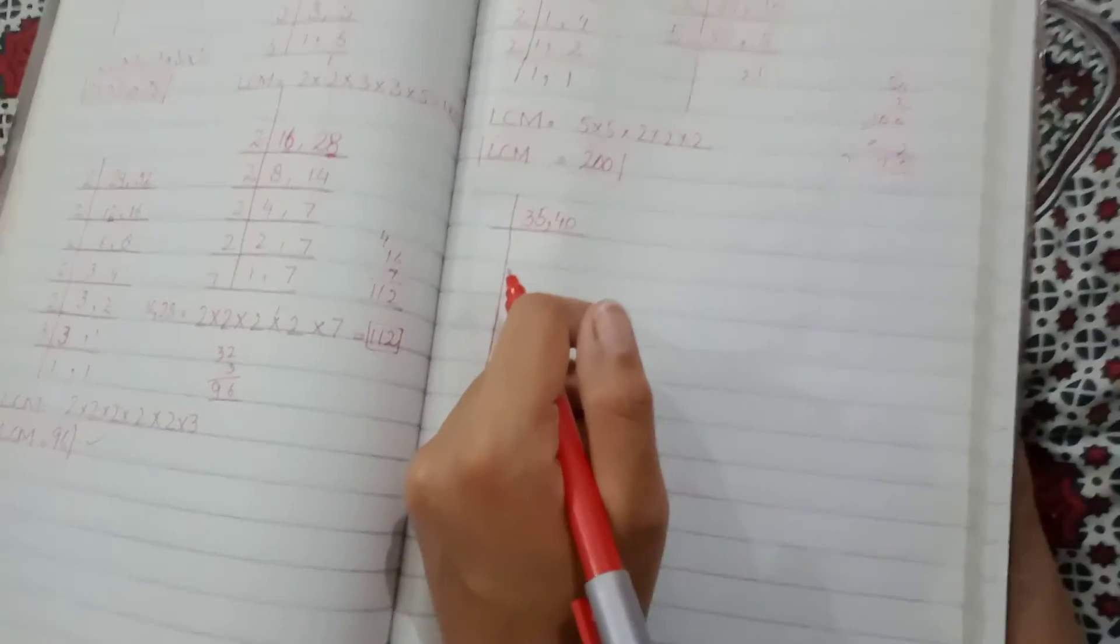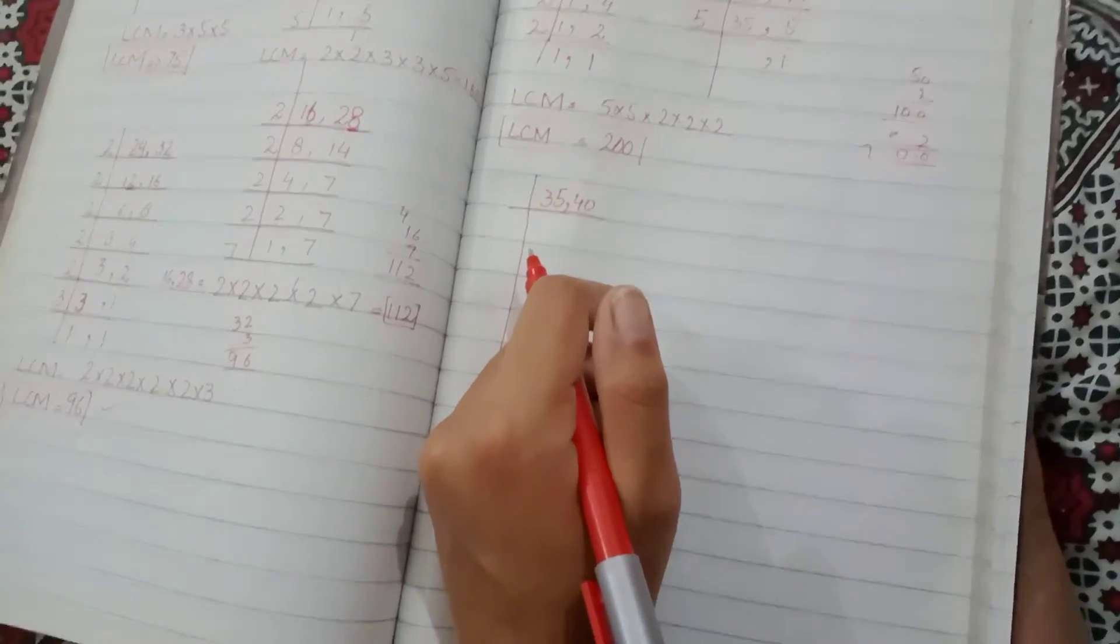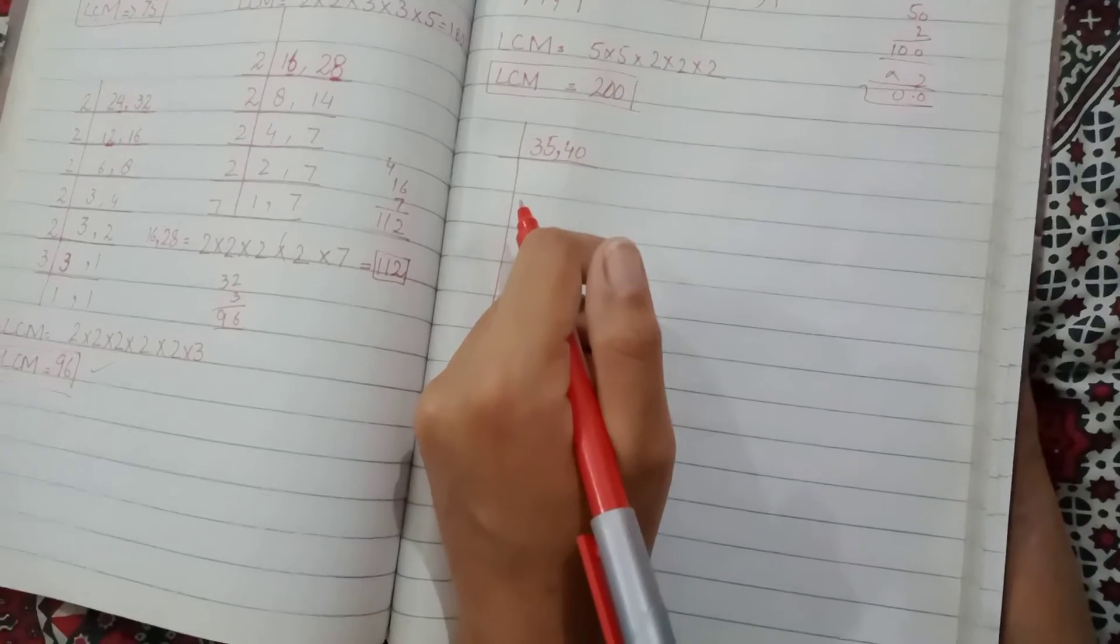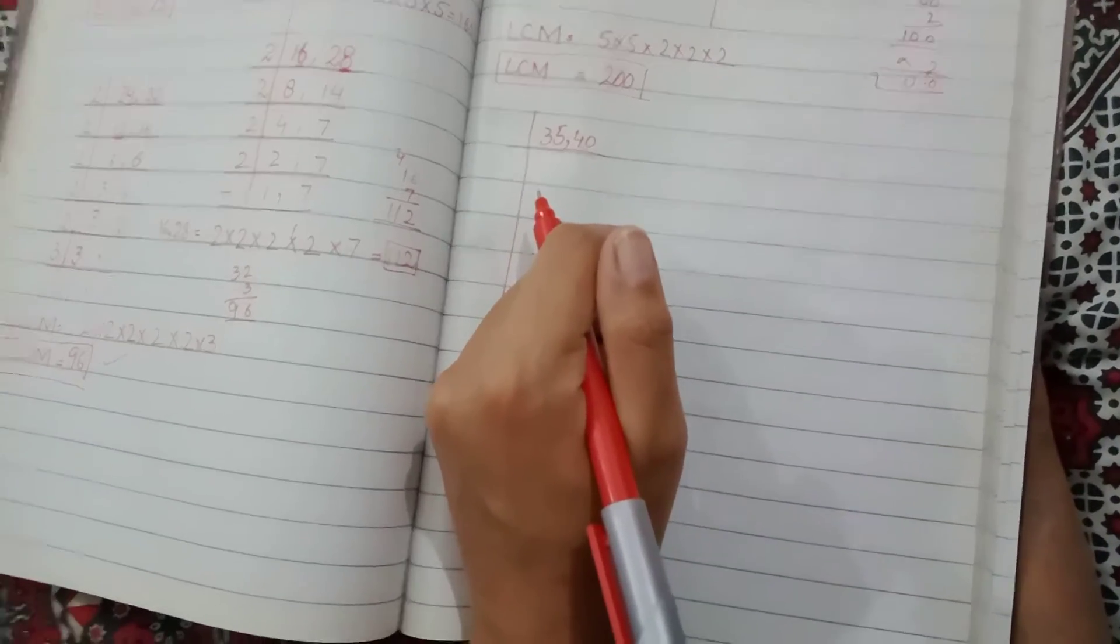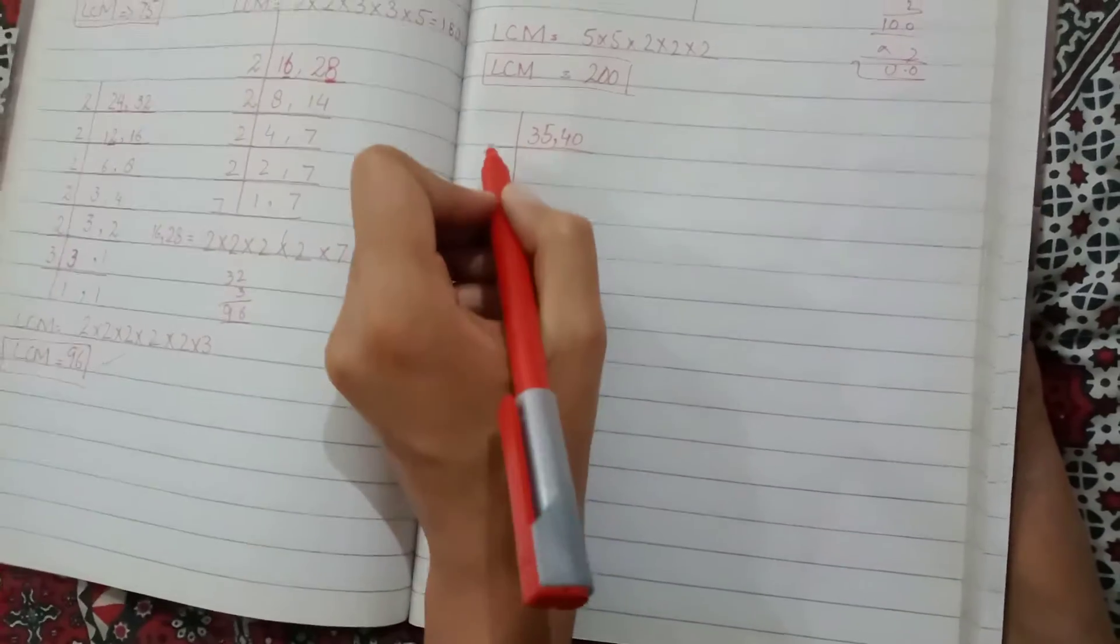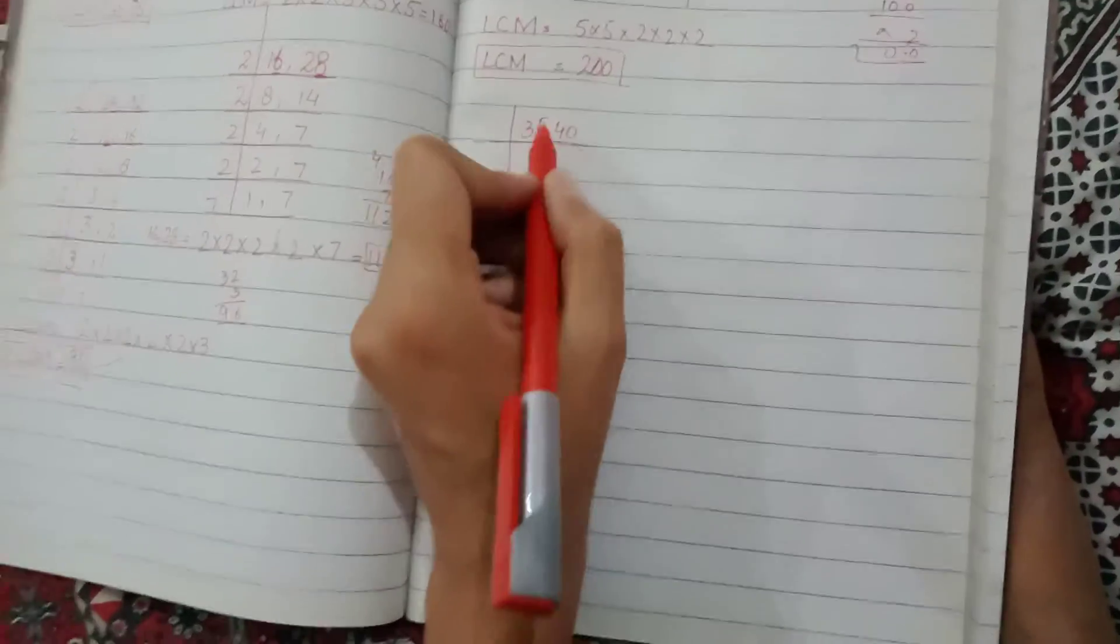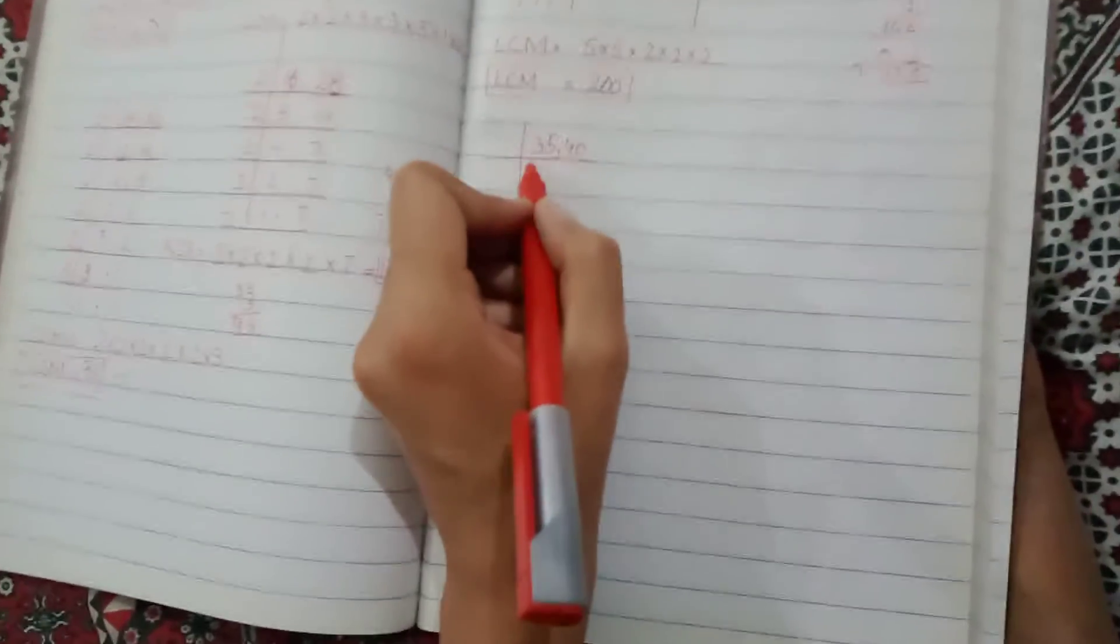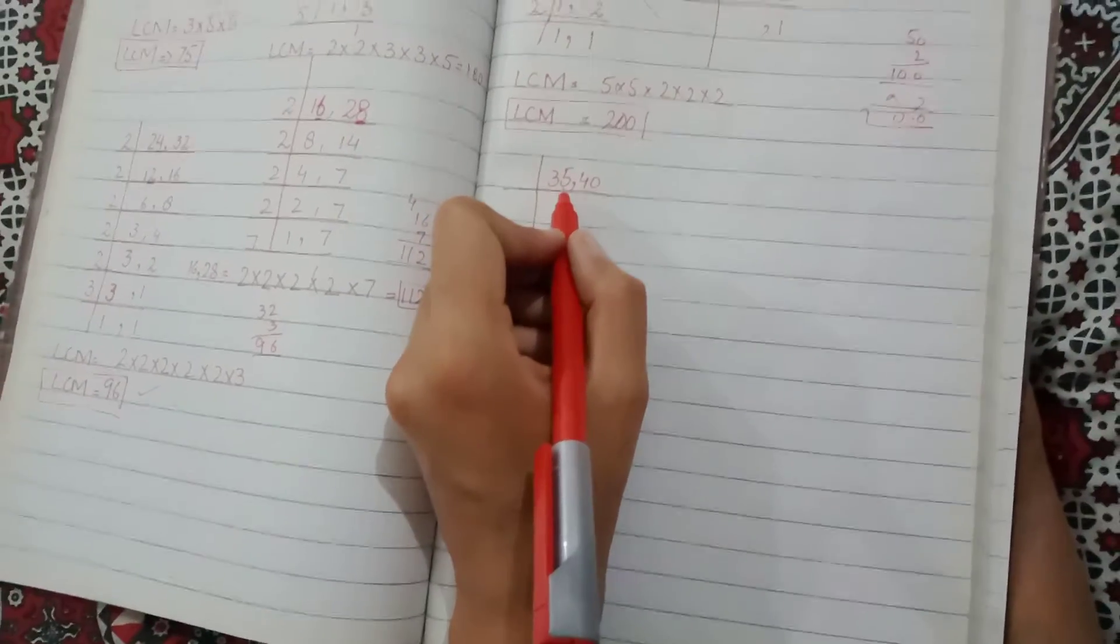Assalamu alaikum students, how are you all? Hope that you all are fine. Welcome to Twitter Online. Today we will find out the LCM, the least common multiple of 35 and 40. So let's see how to find out the least common multiple of 35 and 40.